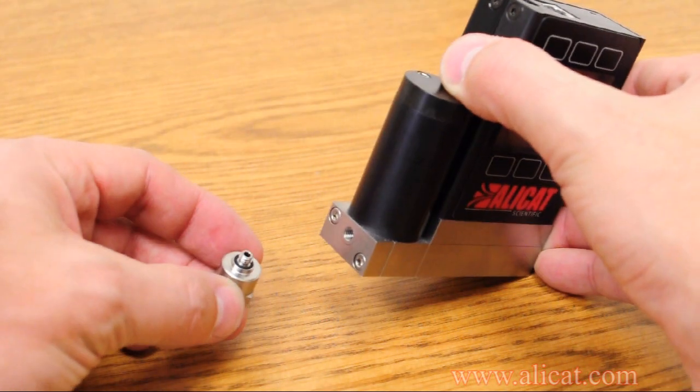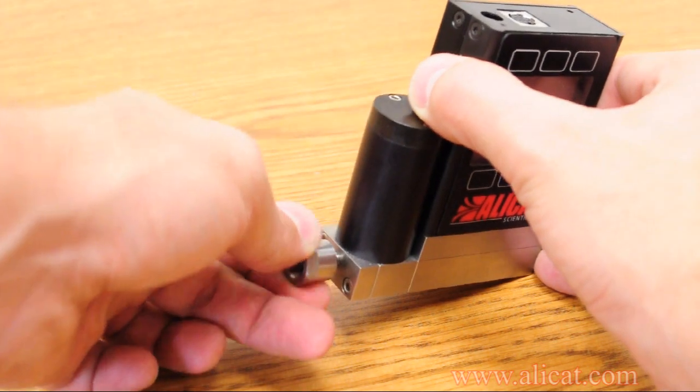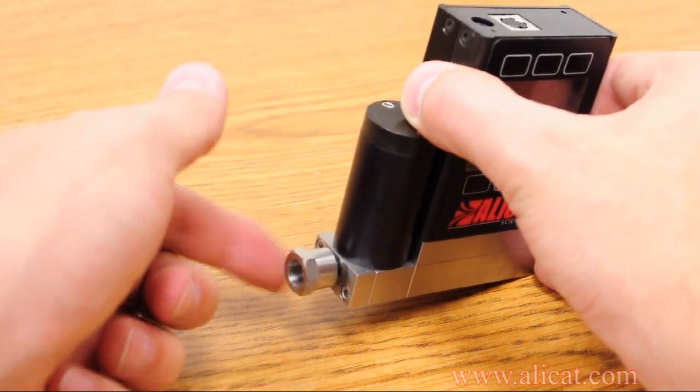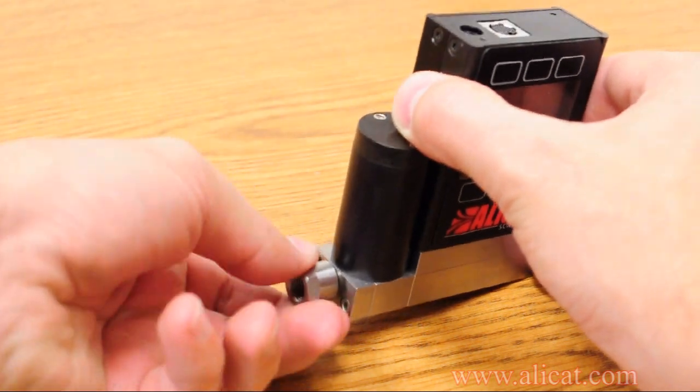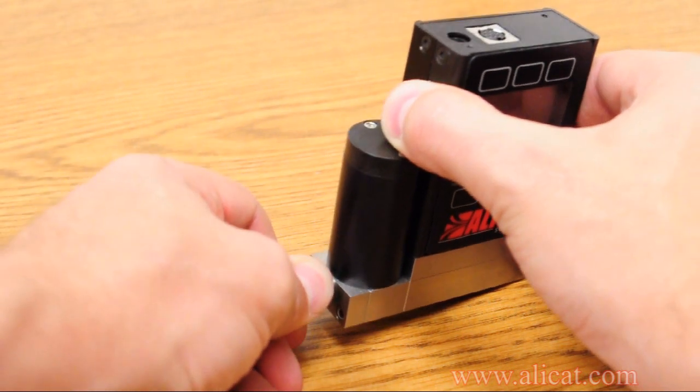In the case of the 1032 to eighth-inch NPT adapter, no Teflon tape is recommended. Screw in the adapter clockwise until finger-tight. Do not use wrenches for this application.